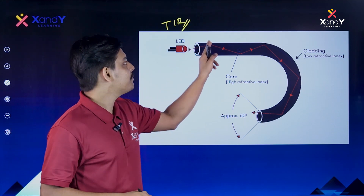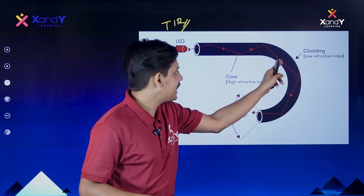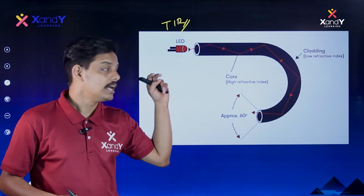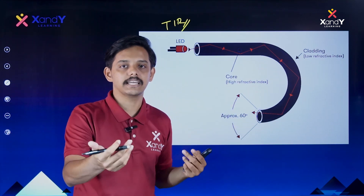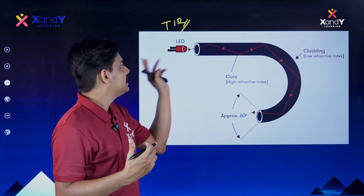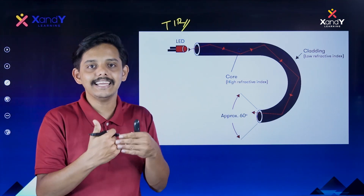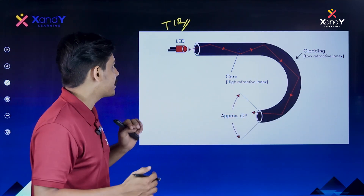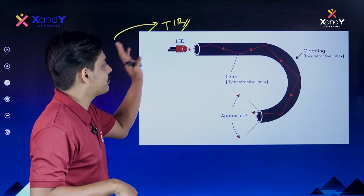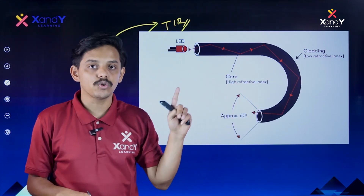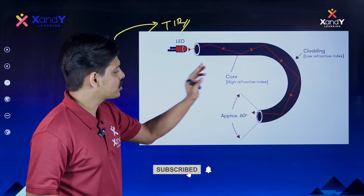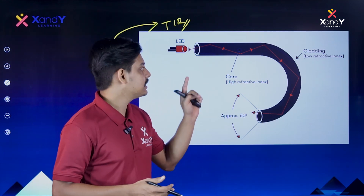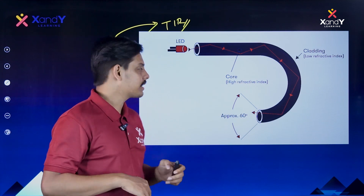In optic fiber, when light enters, it undergoes Total Internal Reflection. That is how light travels through a curved path in optical fibers. Optical fibers are used for data transfer, allowing light to travel at very high speed. So the answer is optic fiber, using the Total Internal Reflection process.